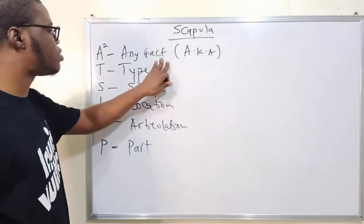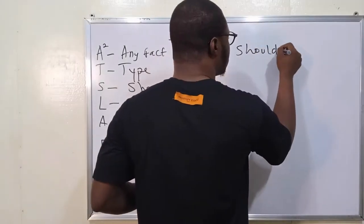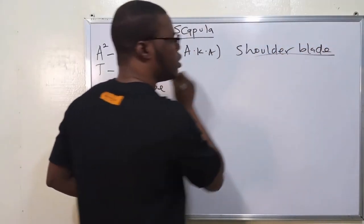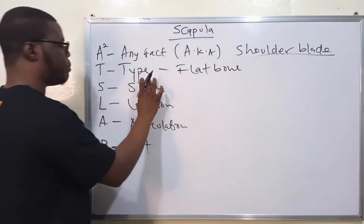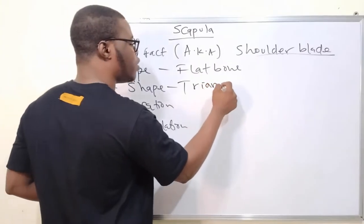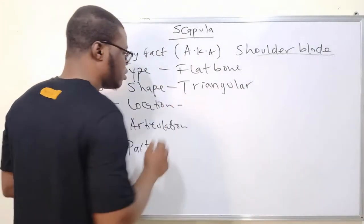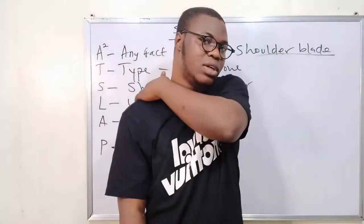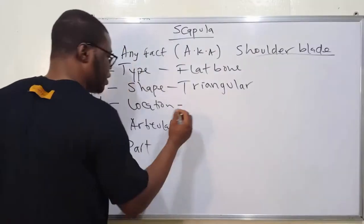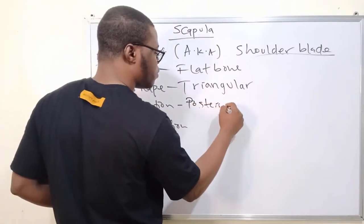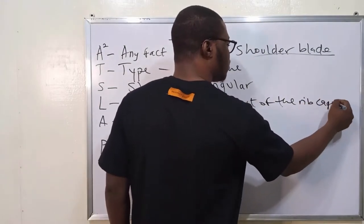Let's get started. For the AKA, the scapula is also known as the shoulder blade. Talking about the type, it is a flat bone. Talking about the shape, it is triangular in shape. Talking about the location, since the scapula is actually the shoulder blade, it is located posteriorly to the rib cage — so at the posterior part of the rib cage.